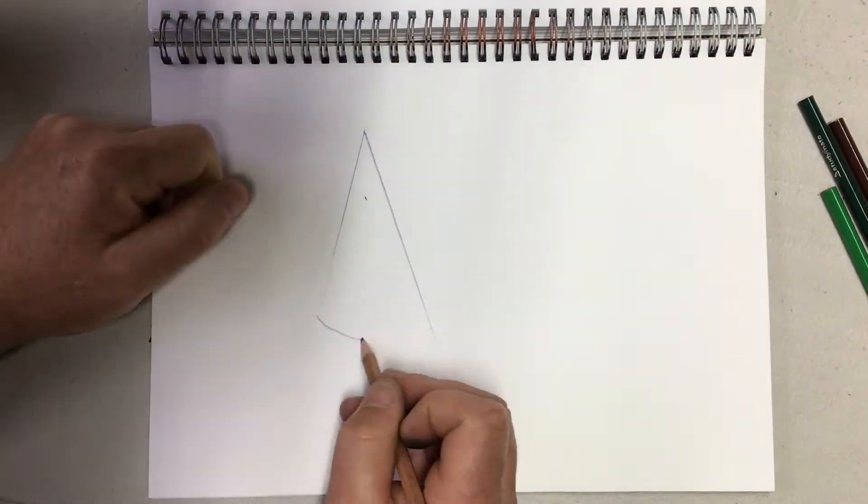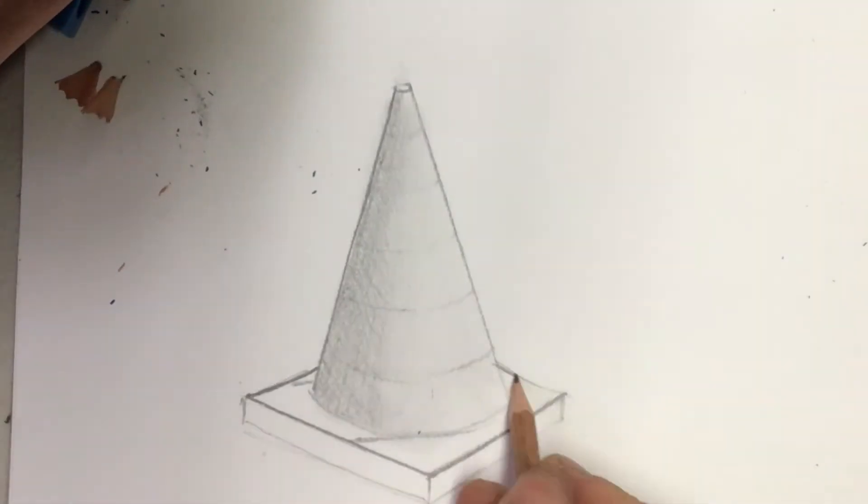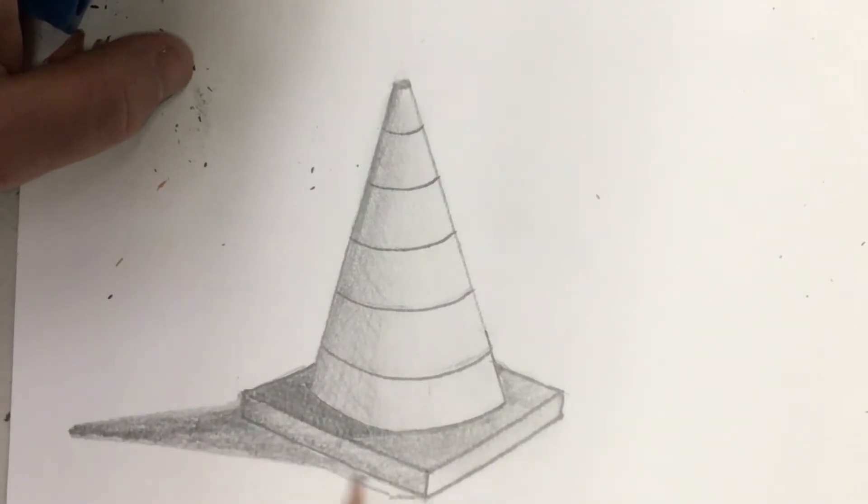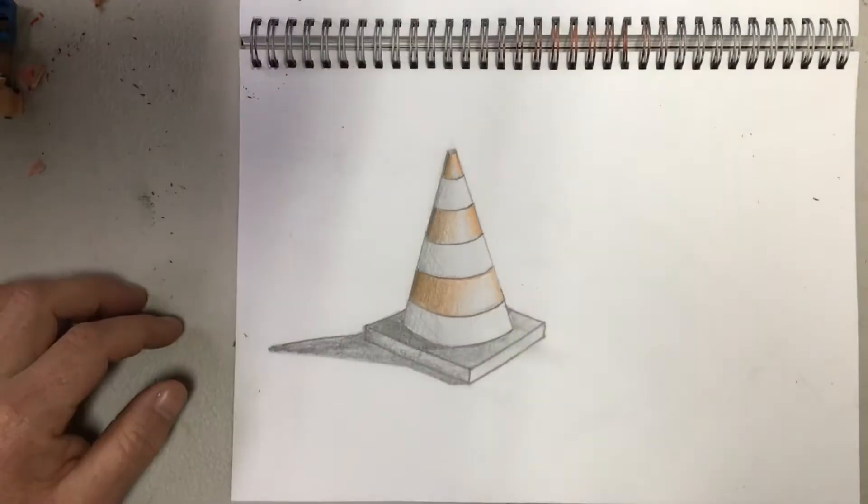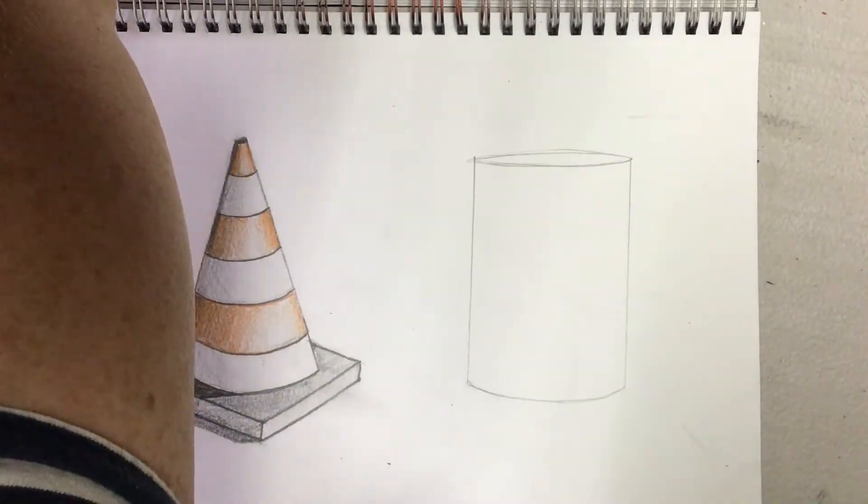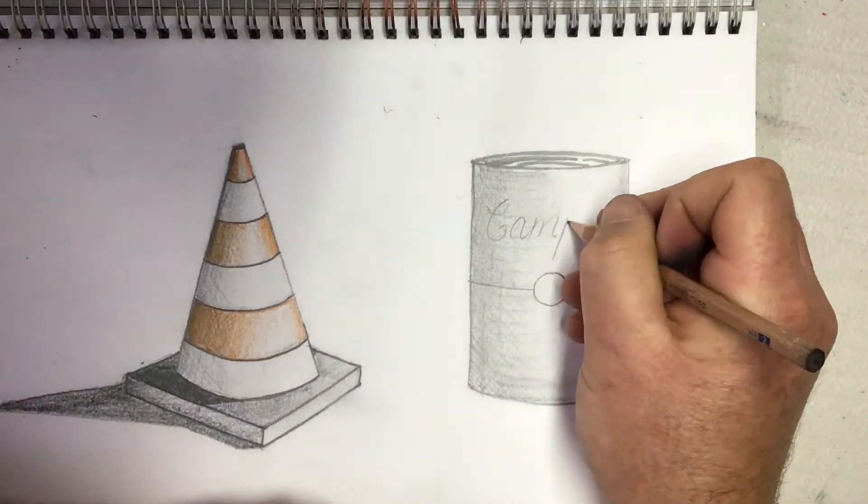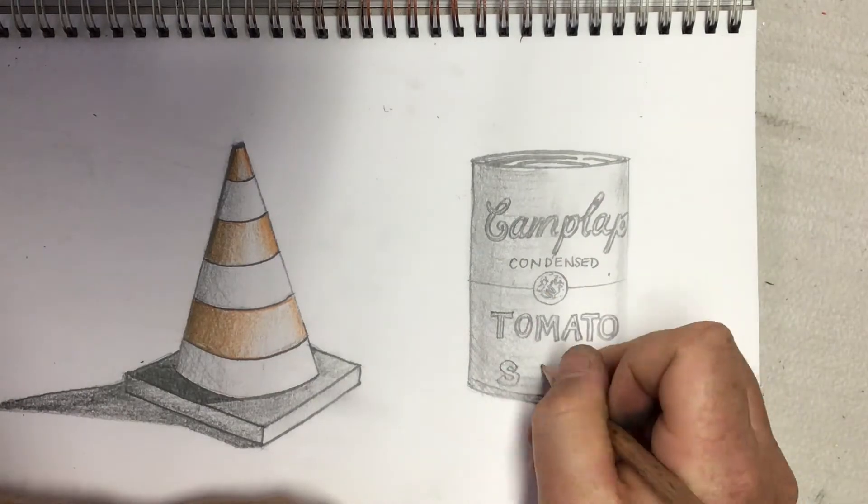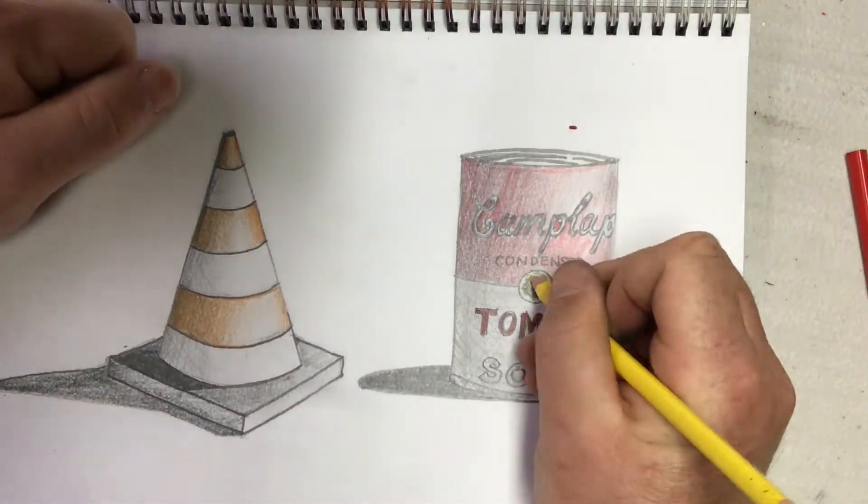Okay, let's try another one. What about say a cone? A traffic cone. Okay, what about a cylinder? A can of soup.